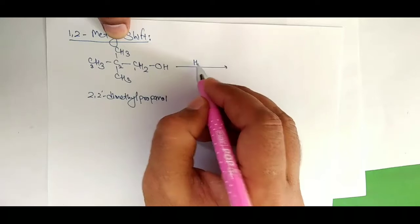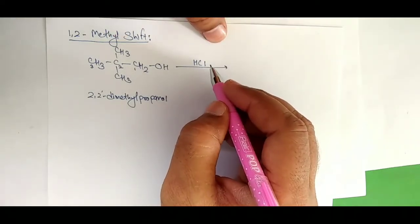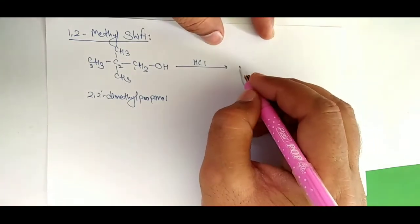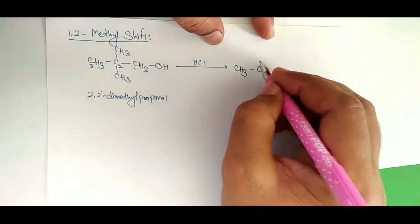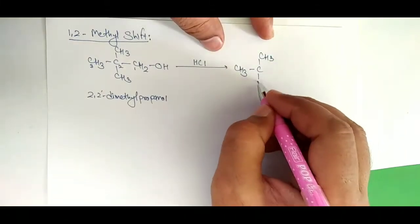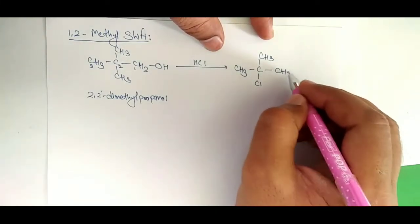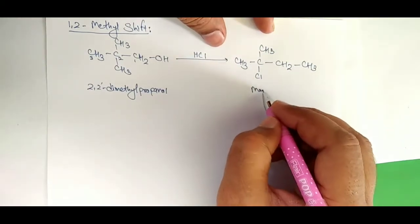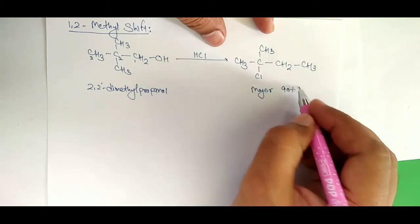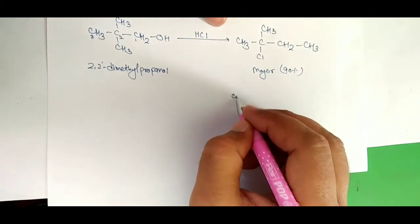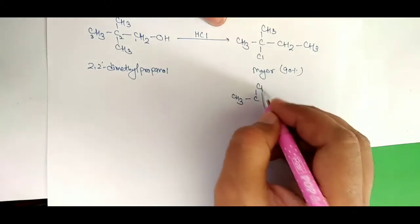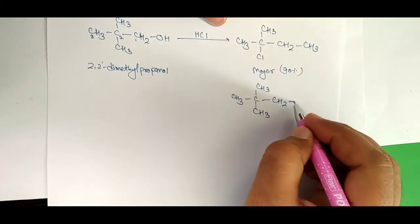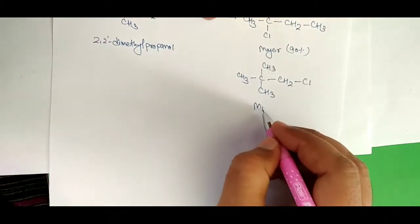Now friends, we are going to get 2 different kinds of products, which I will explain by the 1-2 Methyl Shift. The major product (90%) is CH3, CH3, CL, CH2, CH3. The second product — CH3, CH3, CH3, CH2, CL — is the minor product.